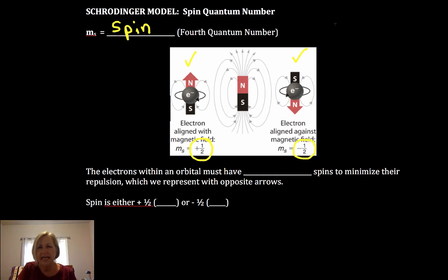But we want to depict where electrons are located and so having to write plus one-half and minus one-half is a little cumbersome. So what scientists have come up with is to put an up arrow for the plus one-half spin and a down arrow for the minus.